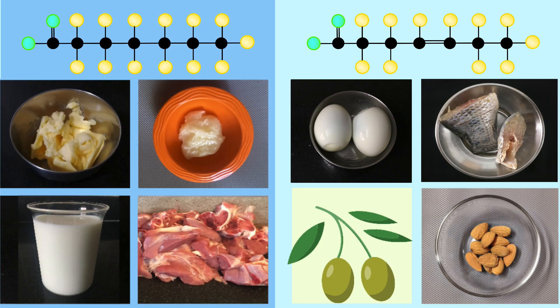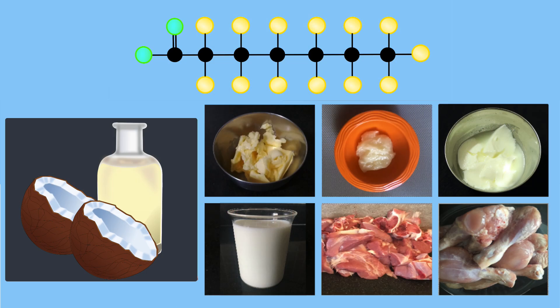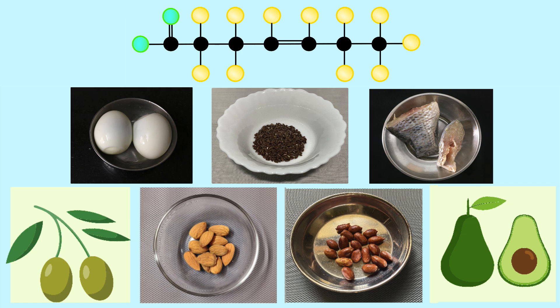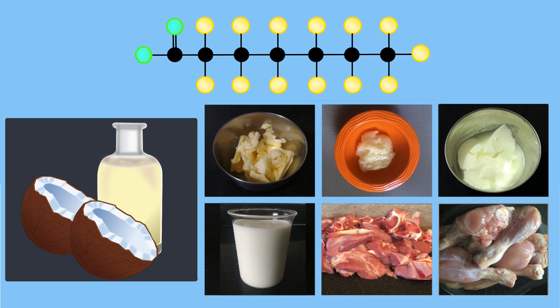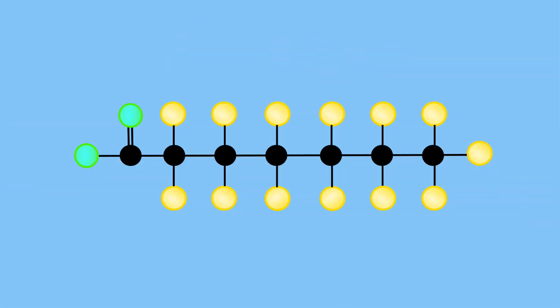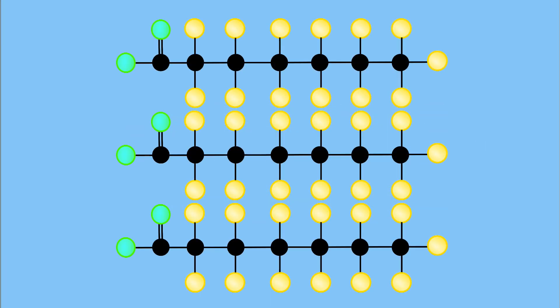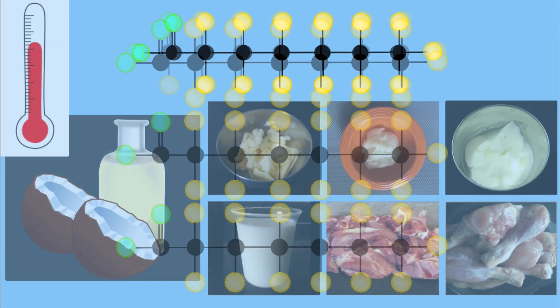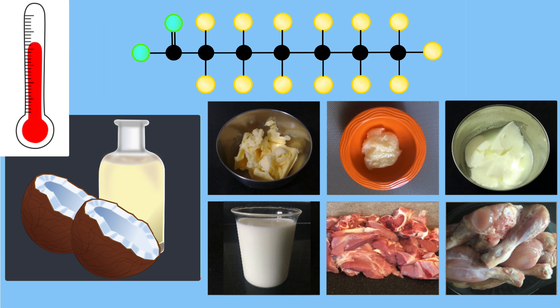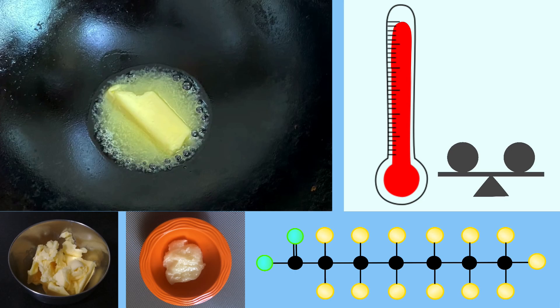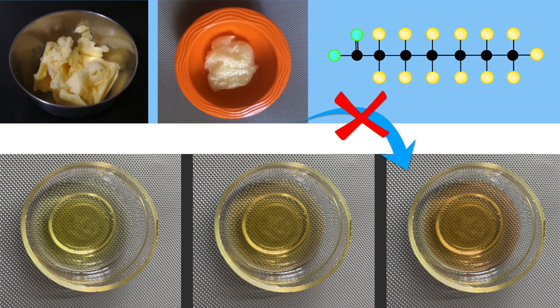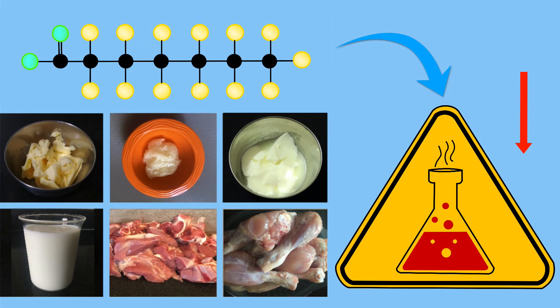Depending on the number of bonds, fatty acids are divided into two types: saturated and unsaturated fatty acids. Saturated fatty acids have only a single bond between two carbon atoms. They are tightly stacked together and compact in structure. As a result, they are mostly solid at room temperature. They do not have any double bonds and are stable at high temperature cooking. They do not undergo chemical changes easily, thus the release of harmful chemicals is also low.